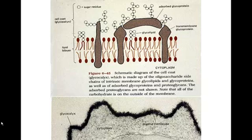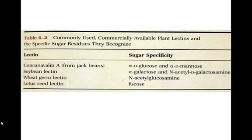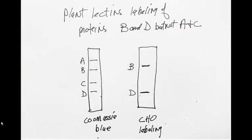There are different types of plant lectins that you could use to detect specific types of sugars. Glucose, fucose, different ones are there. You can use the different ones to detect the sugars in the proteins.